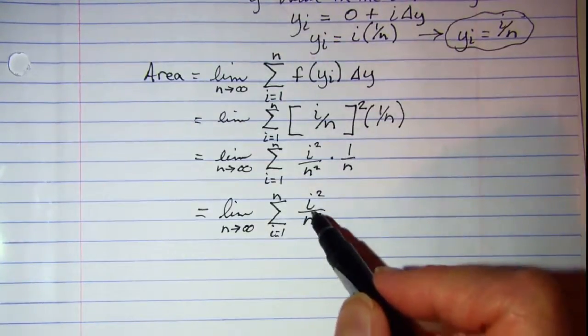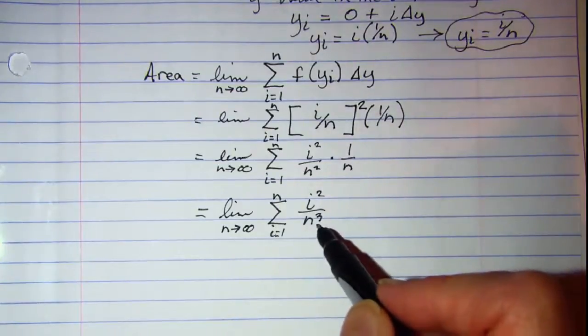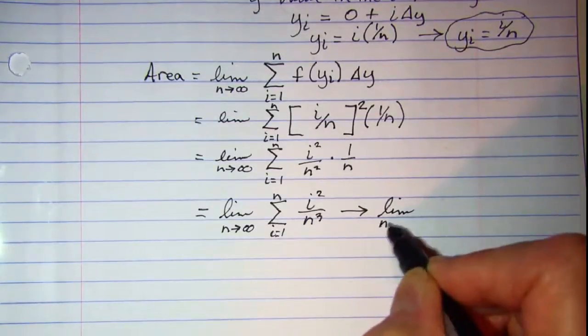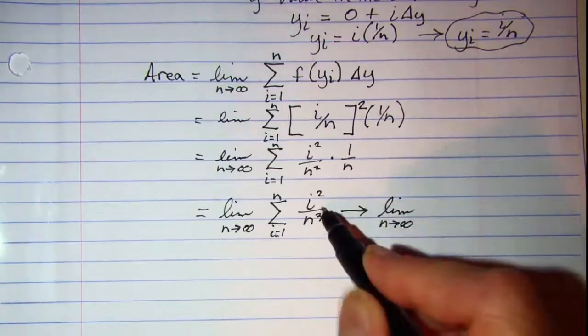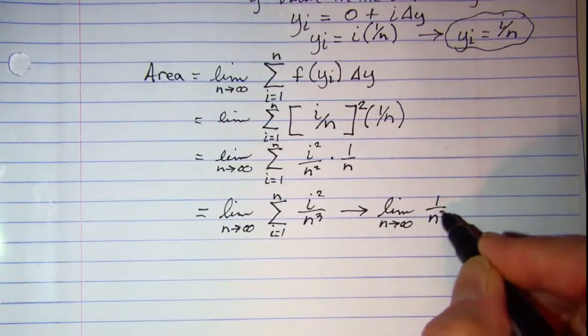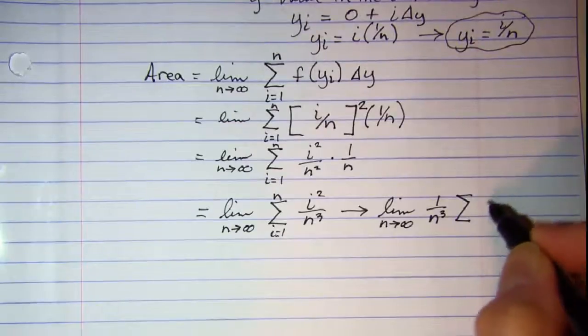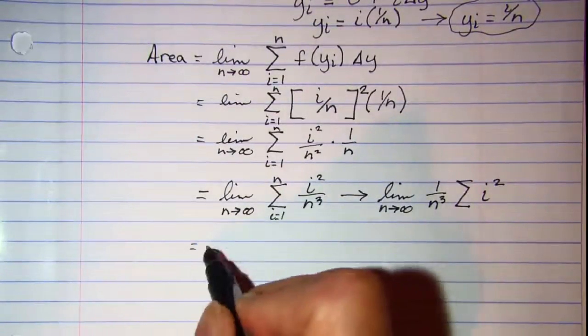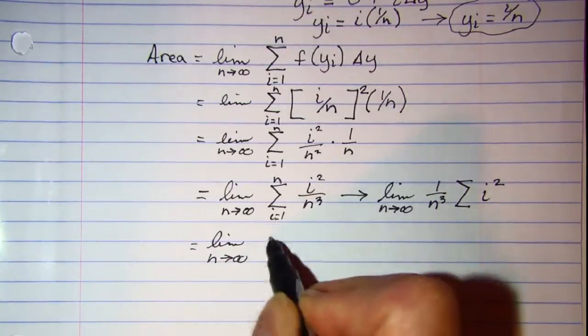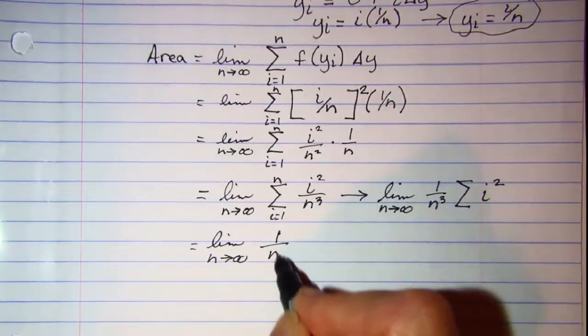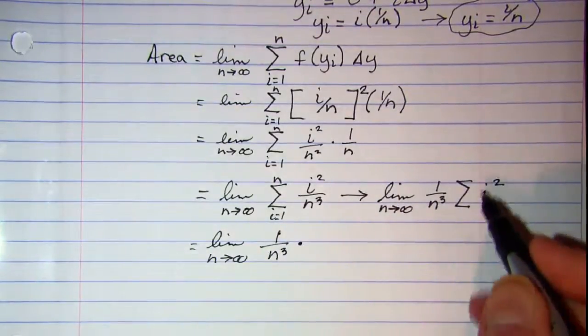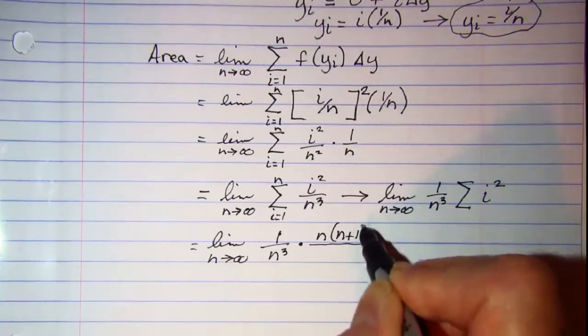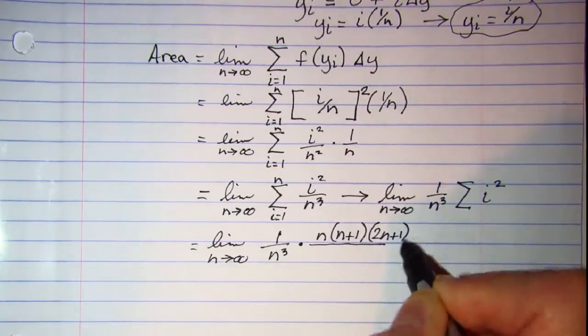Now before I can put my formula in, anything that does not have an i in it I need to take in front of this summation. So this is limit as n approaches infinity, and 1 over n cubed is what I'll bring out in front, and then my summation is i squared. So our formula on this one, the formula for i squared is that long one. So we have n times n plus 1 times 2n plus 1 divided by 6.